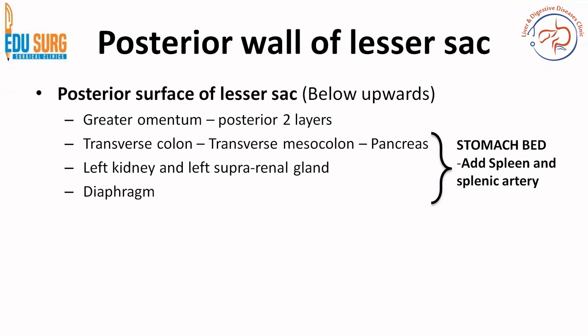The posterior surface of the lesser sac — basically the posterior relations of the stomach — includes the transverse colon, transverse mesocolon, pancreas, left kidney, left suprarenal gland, and diaphragm — these are all structures forming the stomach bed. You add spleen and splenic artery to this. This is a very commonly asked question: the organs and parts forming the stomach bed. If you remember the fish lying between liver and spleen, you will never make the error of putting the spleen as the posterior surface of the lesser sac.